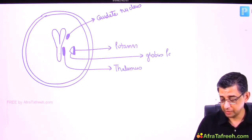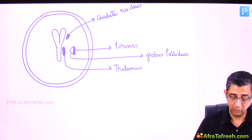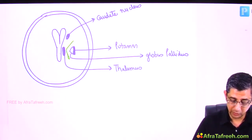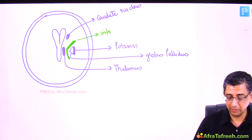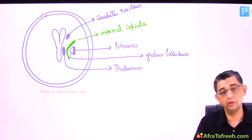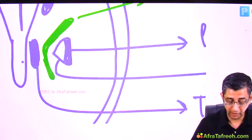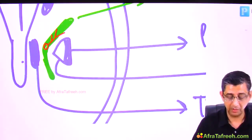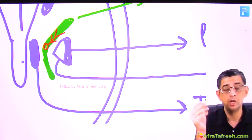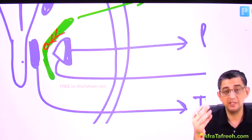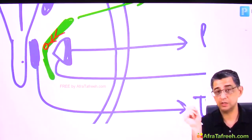Just lateral to the thalamus is the putamen (shaded area), and the relatively white area is the globus pallidus. These anatomical structures are themselves MCQ material. The internal capsule is shown in green, through which the corticospinal pathway travels. If the corticospinal pathway is damaged, neurological deficits occur.